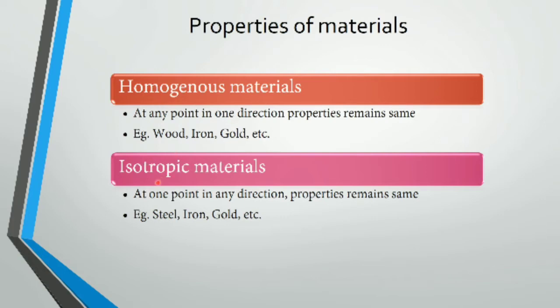Another type of material is homogeneous material and isotropic material. Homogeneous material means all points in one body have the same properties in one direction. Examples are wood, iron, gold, etc.